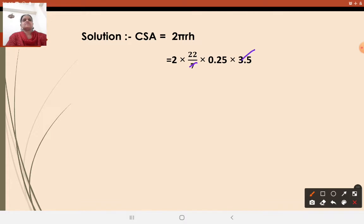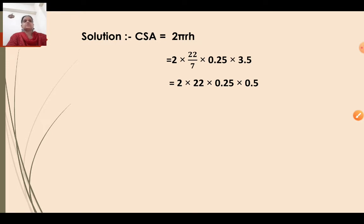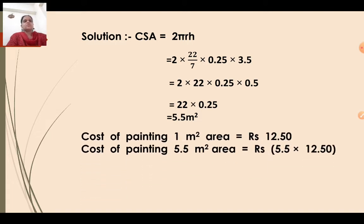Substitute the values: CSA equals 2 into 22/7 into 0.25 into 3.5. Do the calculation — 7 cancels with 3.5 to give 0.5, and 2 into 0.5 gives 1. So 22 into 0.25 gives 5.5. Therefore the curved surface area is 5.5 meter square. Please multiply yourself in a rough book and then check the answer so that your concept is clear.